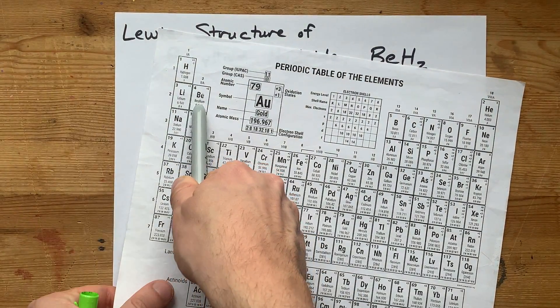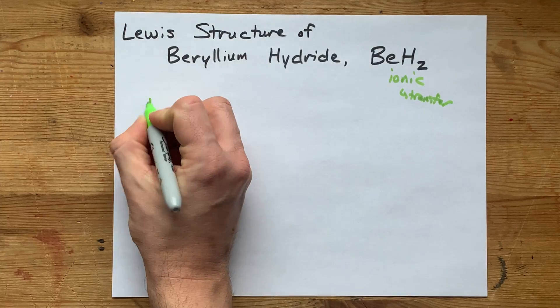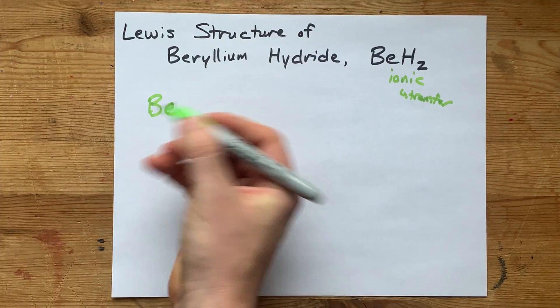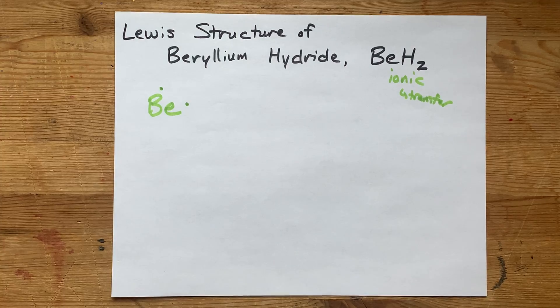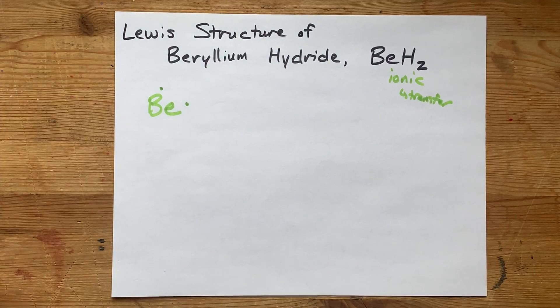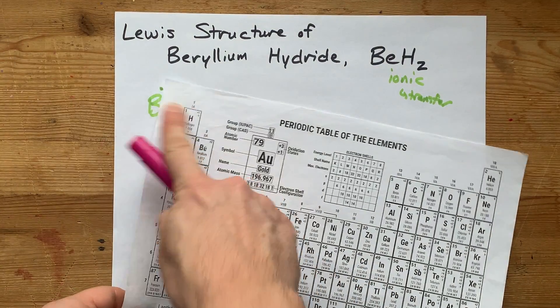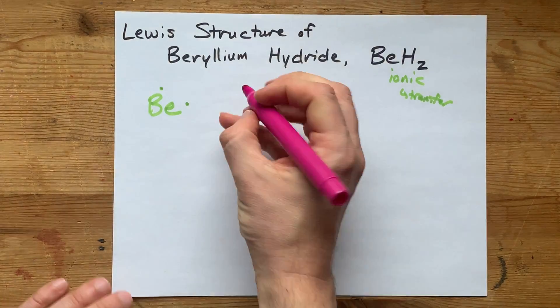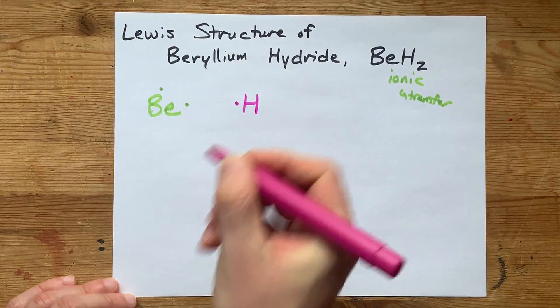The metal here is beryllium in group 2, so we're going to start with a Be, beryllium atom, and 2 valence electrons. Now hydrogen is in group 1 of the periodic table, so we're going to draw an H with 1 valence electron.